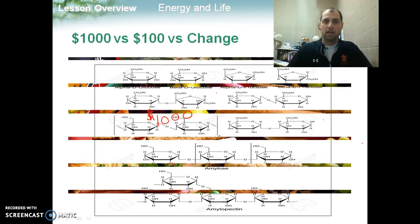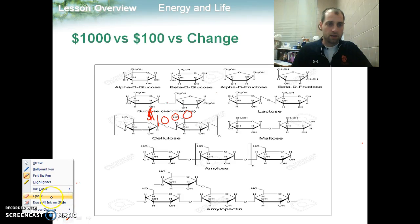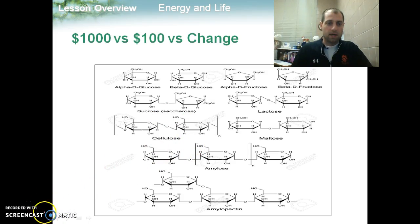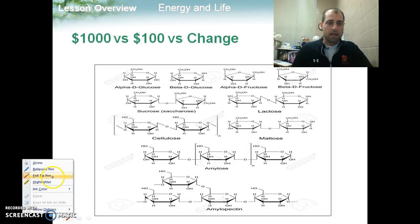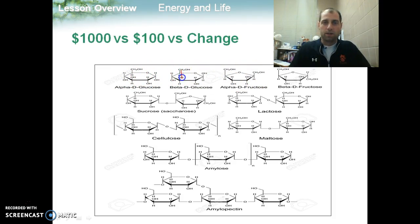Now, as we break that down, the $1,000 bills we're going to break up as we go through digestion. So as we digest those sugars that we find in that food, we're going to break up these polysaccharides and disaccharides into monosaccharides. And these monosaccharides are like $100 bills — money that we're a little bit more comfortable walking around with in our pockets.